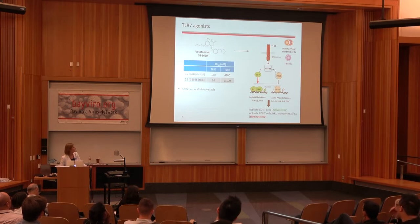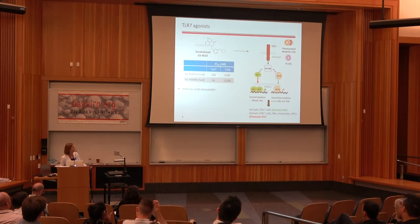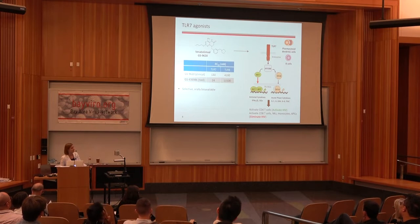In doing so, TLR7 agonist accomplishes both the activation part of our strategy by turning on or activating CD4 T cells, and also activating effector cells, thereby helping with elimination.